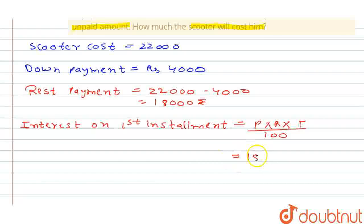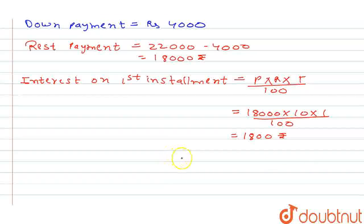So it is going to be 18,000 into 10% into 1 year upon 100. So it is going to give us Rs. 1,800. This is the first interest he paid.